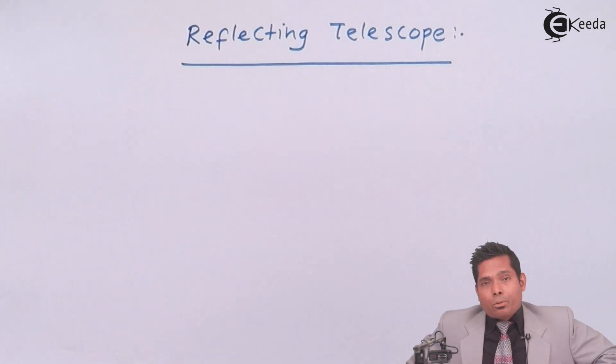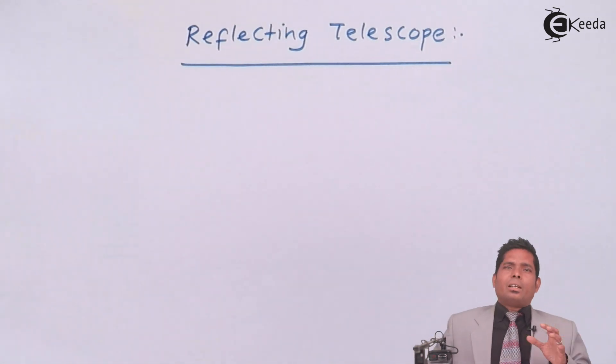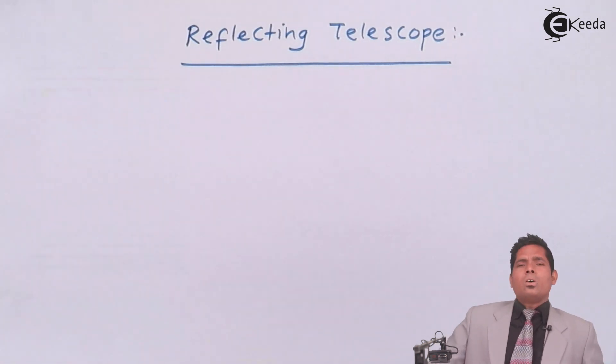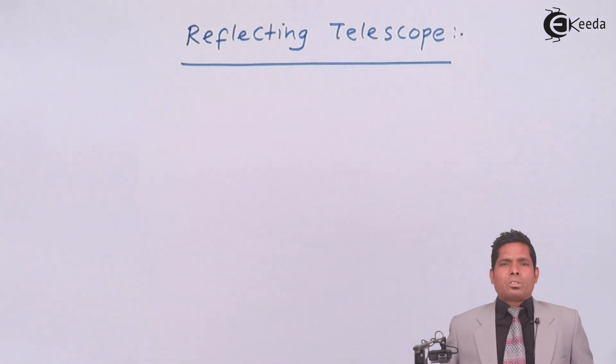So in case of a mirror, if you use a mirror for reflection, then that chromatic aberration can be eliminated. Because in mirrors, there is no chromatic aberration or any sort of lateral aberrations or longitudinal aberrations.